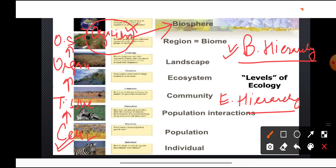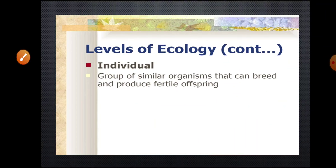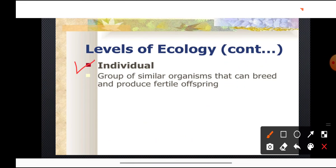In the ecological hierarchy, the starting point — the lower level — is the organism or individual. Today we will study each level of the ecological hierarchy individually. The lowest level of ecological hierarchy is the individual or the organism. An individual is a group of similar organisms that can interbreed and produce fertile offspring.